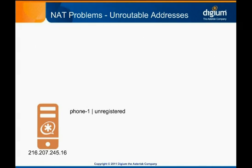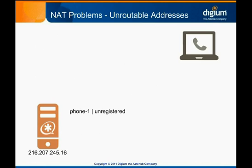The first problem related to SIP and NAT occurs when a SIP device is behind a NAT and tries to register with Asterisk. As a simple example, let's assume that a user on an Asterisk system is a traveling salesman, and they frequently register to Asterisk using a soft phone client from various private networks around the world. Here, they are connecting to a hotel network.